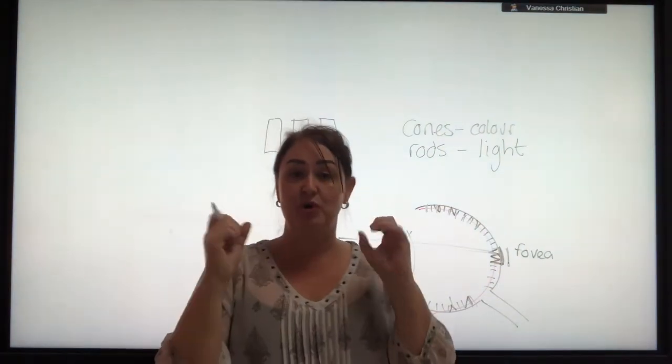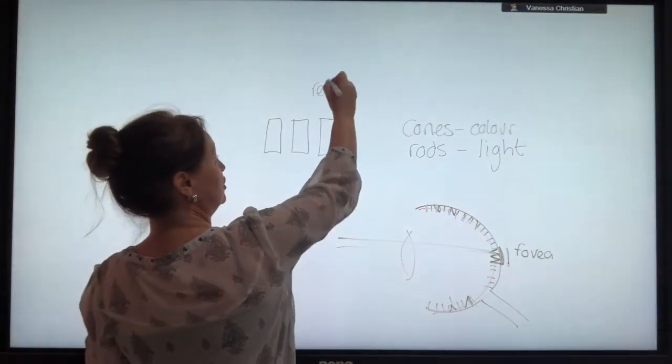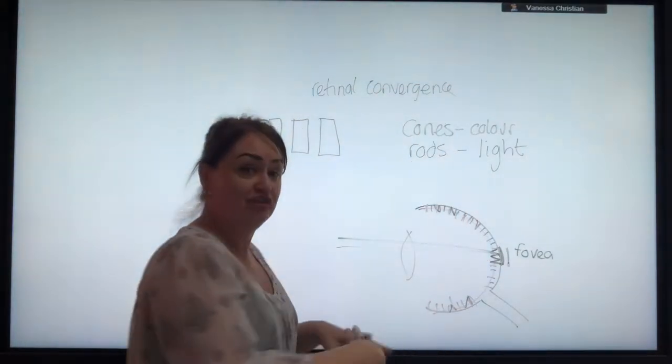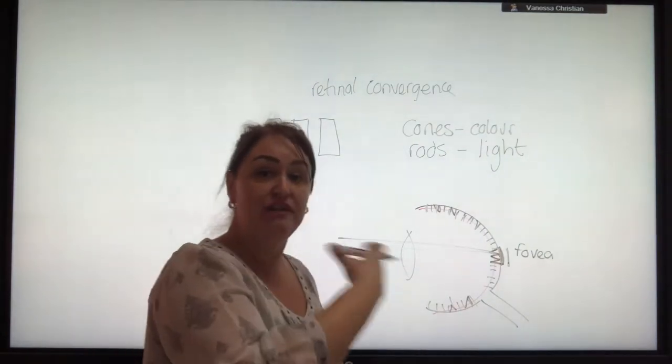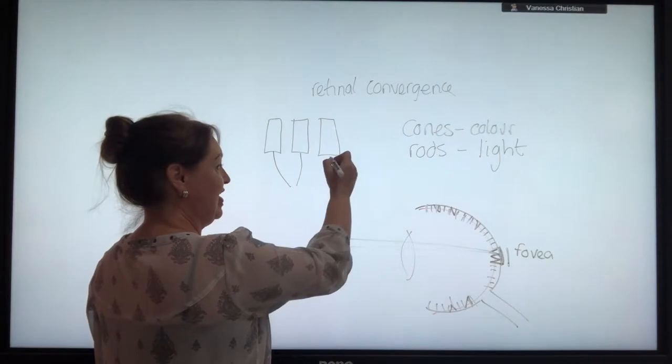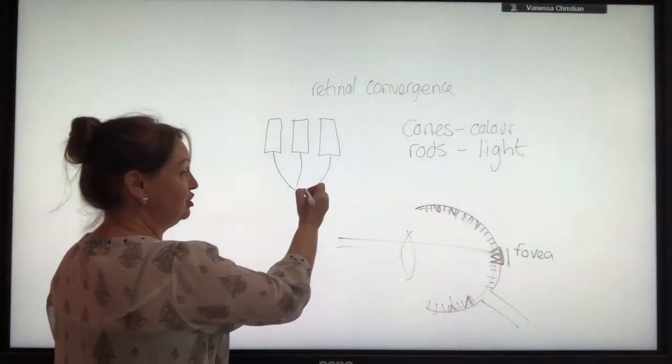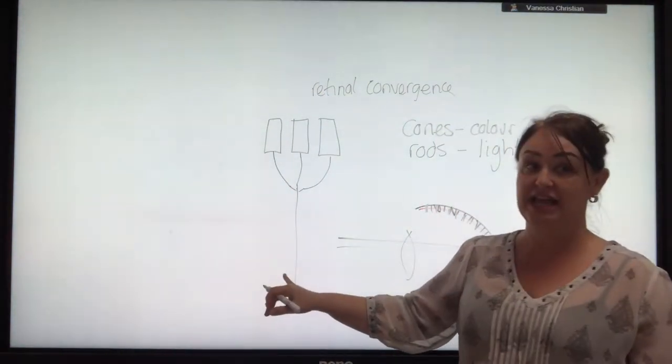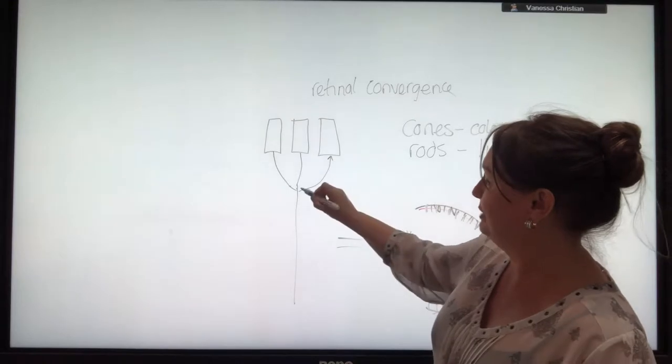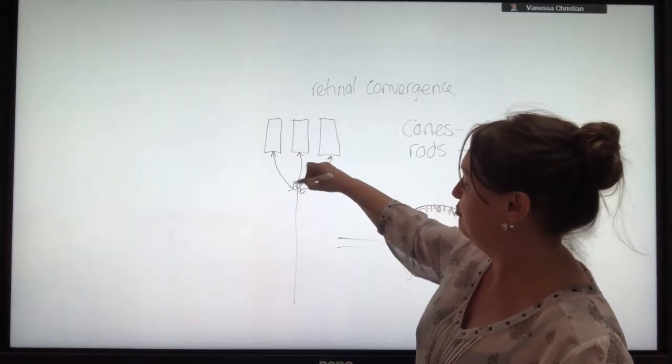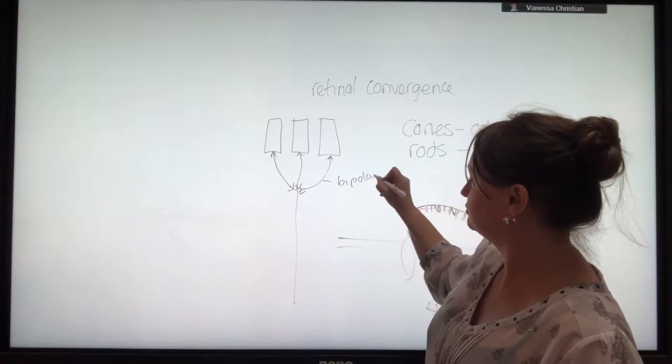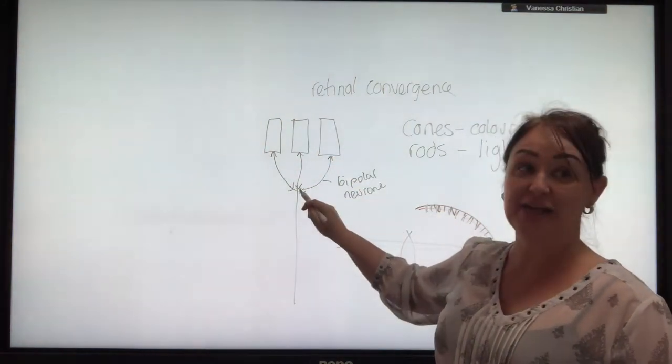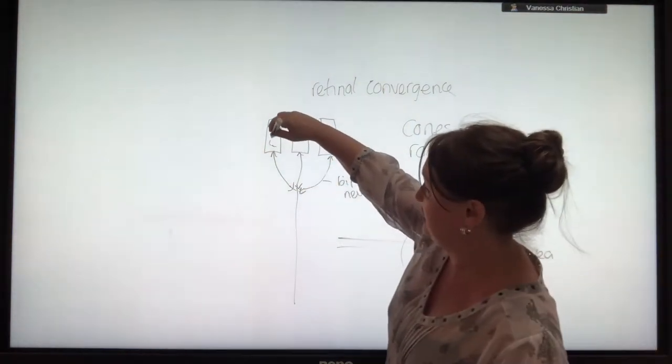Rods have what we call retinal convergence. In other words, they converge on the retina because perhaps 3, 4, 5 or whatever share a neuron. So each of those join together and they would go off to the optic nerve. Each of these little bits here is called a bipolar neuron. It just means that it connects there and it connects there.